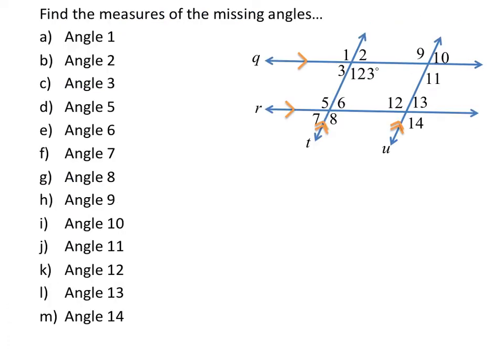On the figure to our right, we are going to find the measures of missing angles. It'll probably be helpful if we just label our diagram first. We're given one angle that is 123 degrees. From our theorems, angle 5 would be 123 degrees because they're alternate interior angles.